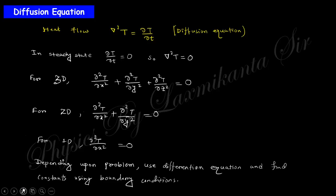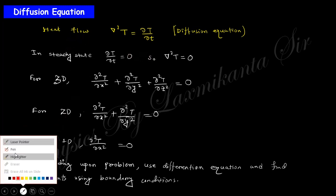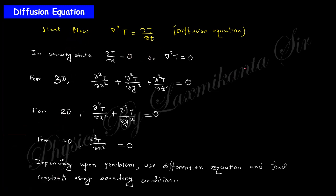Let us start. You can see this is the heat flow within any material. If you take a three-dimensional material — rectangular or somewhere else — this heat flow equation will be like that for three dimensions. This is actually the total equation. In steady state, the temperature gradient with respect to time does not change; it will only depend on space. Then the equation becomes like that. This is the steady state case for three dimensions, two dimensions, and one dimension.